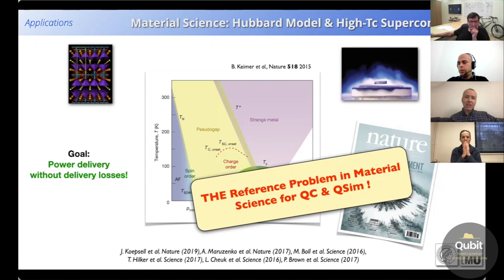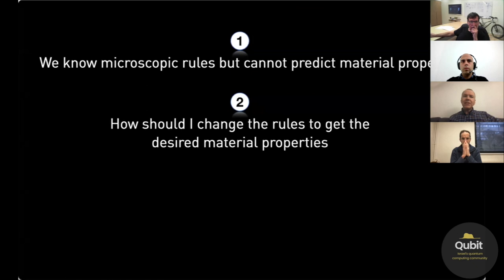So what are we trying to do? Well, basically in this kind of problem, we know the microscopic rules of the system very well, how these electrons behave and interact with each other. But still, we cannot calculate what kind of material properties emerge from that. That's simply because of the complexity of those systems. Or, number two, the question could be, how should I change those rules to get a specific material property out of that?